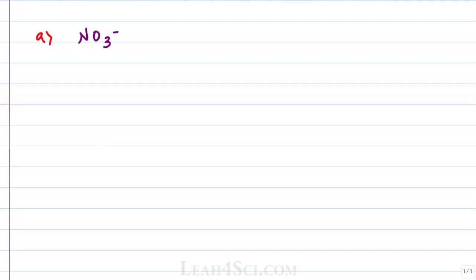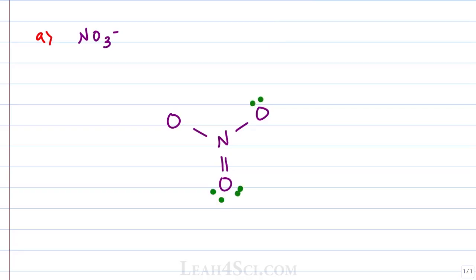The first question asks for the resonance structures of nitrate. If you follow my Lewis tutorial video linked below, you'll see that we start out with the nitrogen surrounded by three oxygen atoms, where nitrogen is double-bonded to one oxygen and single-bonded to two others. The double-bonded oxygen has two lone pairs, and the single-bonded oxygens each have three lone pairs, giving a formal negative charge on the single-bonded oxygens and a positive charge on nitrogen.